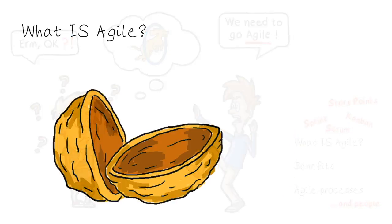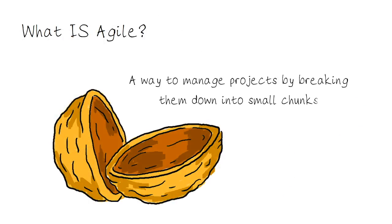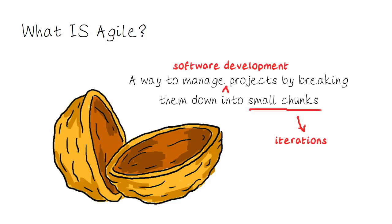So first things first, what is agile? In a nutshell, it's a way to manage projects by breaking them down into small and manageable chunks, and these chunks are generically known as iterations. Now in theory, agile can be used for any type of project, but it was founded in software development, so that's the angle that I'll be taking for this course.